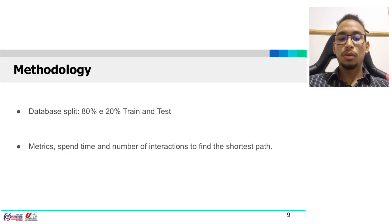To evaluate the CNN encoder, we split the database into 80% for training and 20% for testing. The metrics used were the time spent and the number of iterations to find the shortest path. Also, we compared the CNN encoder model with traditional methods.